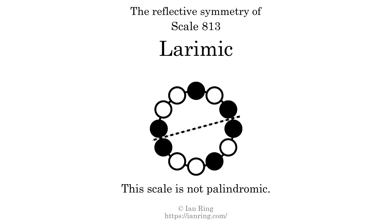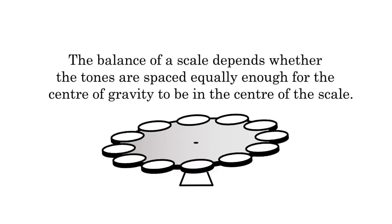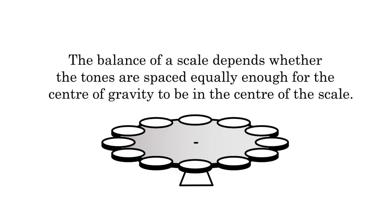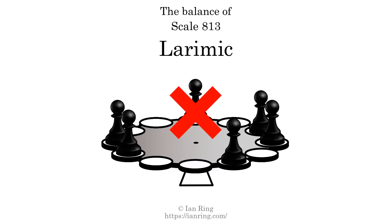This scale has reflective symmetry across an axis position 2.5 semitones from the root. This scale has a different pattern of intervals ascending and descending, so it is not palindromic. This scale has one ridge tone. The balance of a scale depends on whether the tones are spaced equally enough for the center of gravity to be in the center of the scale. This scale is not balanced.